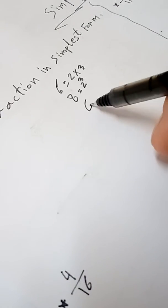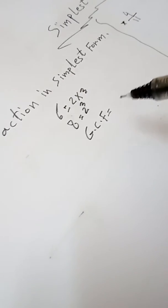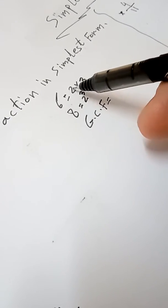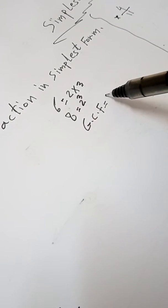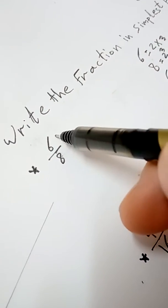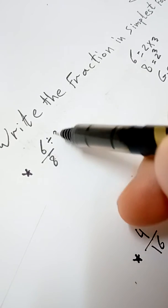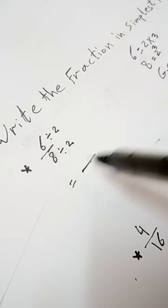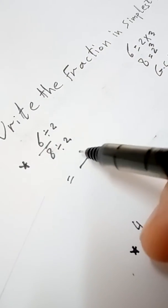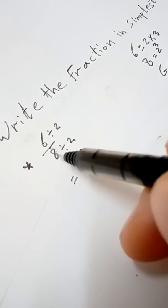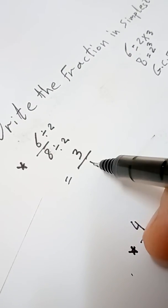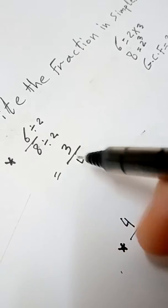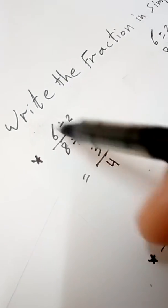Now find the GCF. The common factor is 2; take it in the lowest exponent, so GCF equals 2. Go back to the fraction and divide both numerator and denominator by 2. 6 divided by 2 equals 3, and 8 divided by 2 equals 4. So the simplest form of 6 over 8 is 3 over 4.